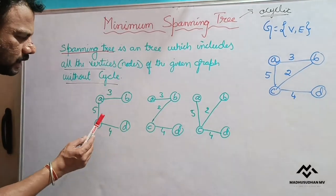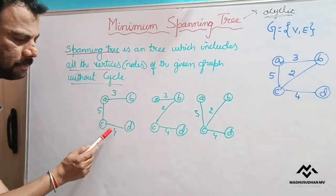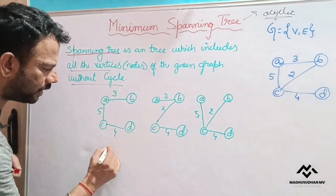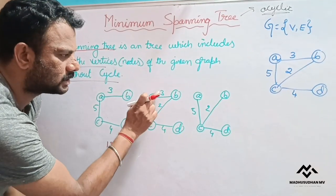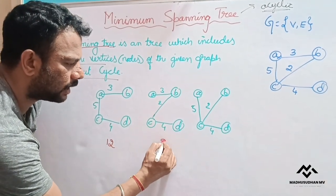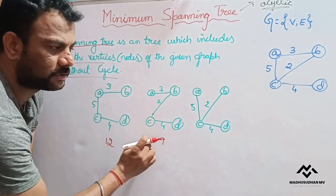Now let us see, what is the total weight of this spanning tree? So 5 plus 3, 8, 8 plus 4, 12. The total weight of this spanning tree is 12. Similarly, the total weight of this is 3 plus 2, 5 plus 4, 9. This is the total weight of this spanning tree.